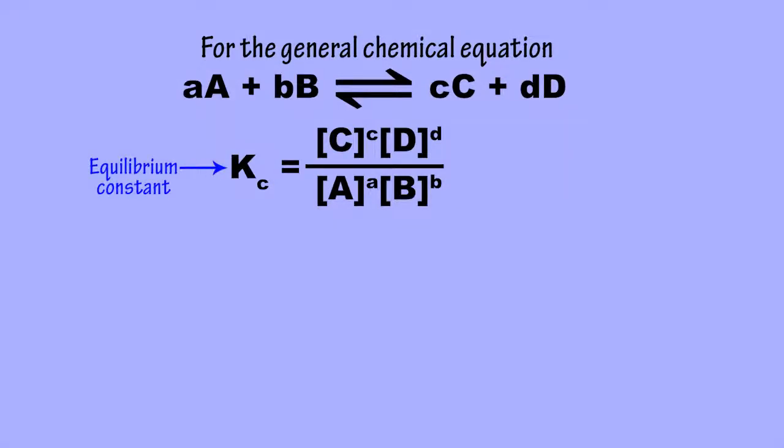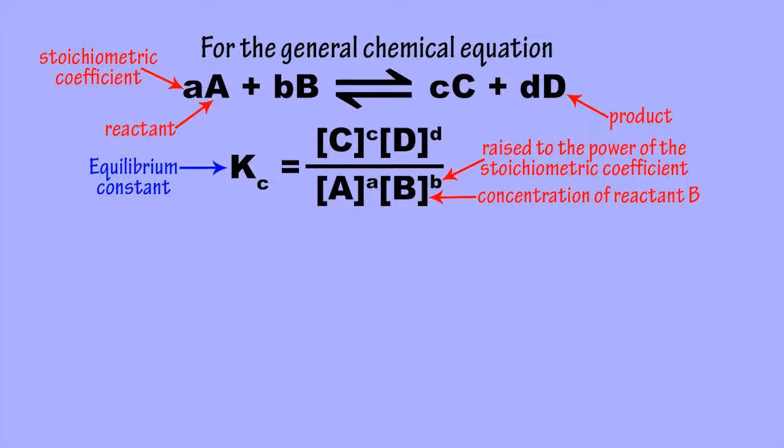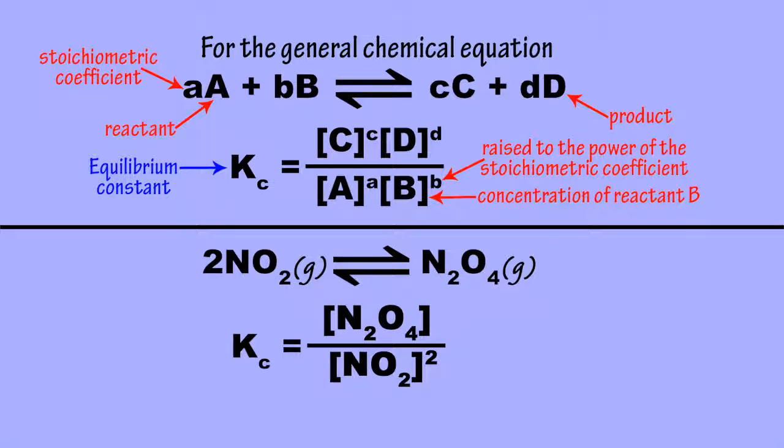The equilibrium constant can be used to calculate the relative proportions of each gas at equilibrium. At any given temperature, the concentration of N2O4 divided by the concentration of NO2 squared yields a unique fixed value, called the equilibrium constant.